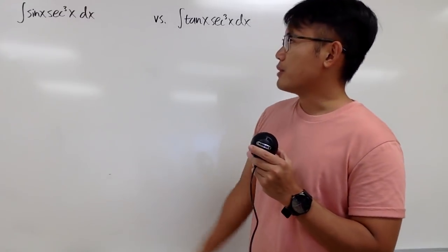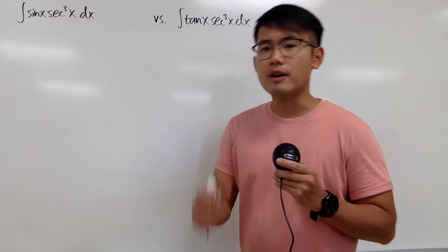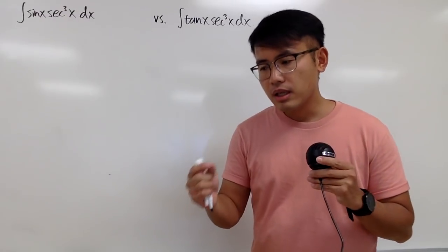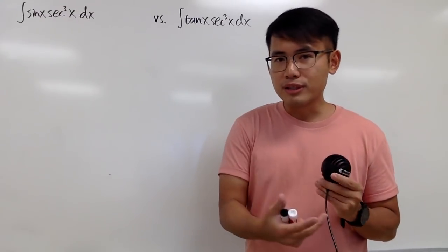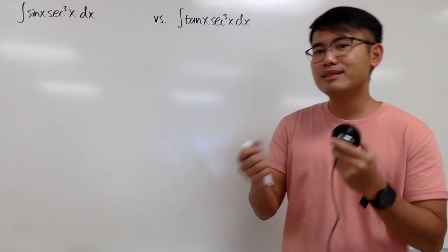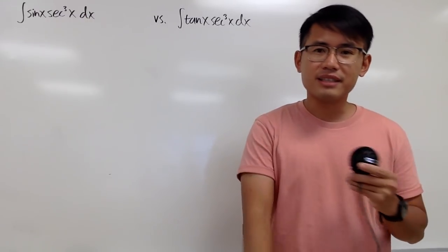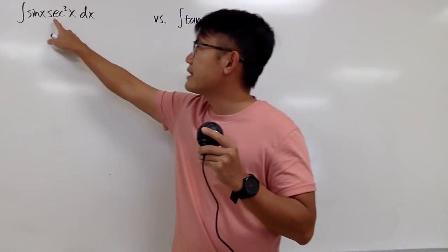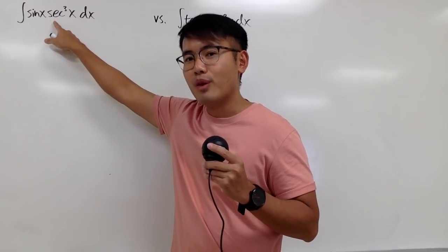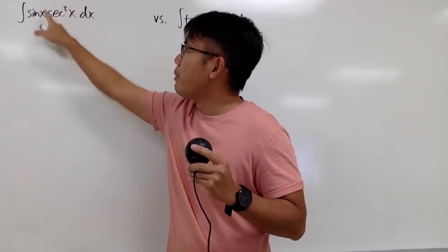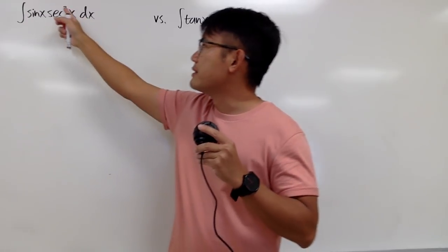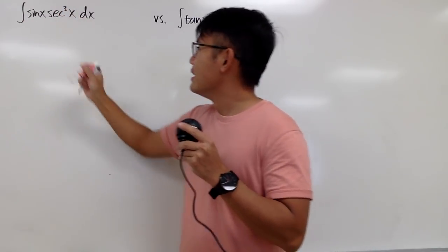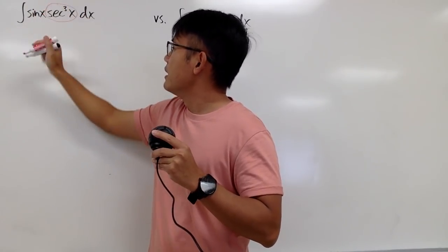For the first integral, we have sine x and the other function is secant x raised to the third power. The derivative of sine is cosine x, and the derivative of secant x is secant x times tangent x — that's not ideal, but it's okay. We know secant is the same as 1 over cosine, so we can rewrite secant cubed x as 1 over cosine to the third power x.